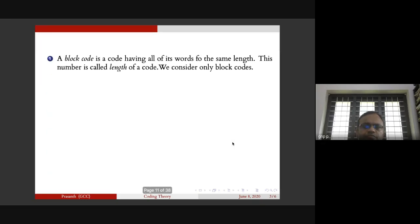A block code is a code having all of its words of the same length. This number is called the length of a code. Throughout our discussion, we consider only block codes.